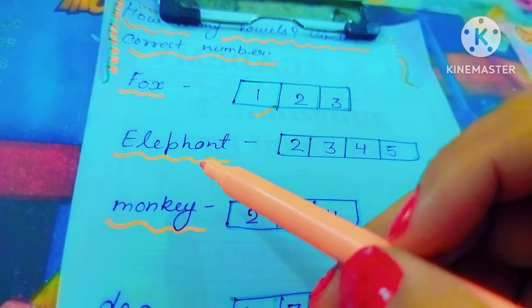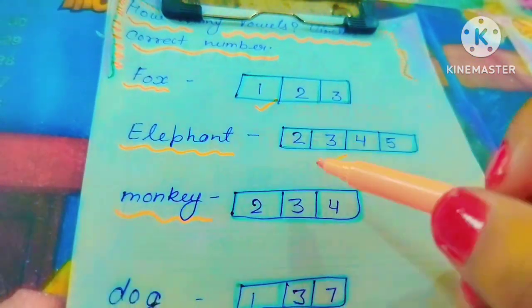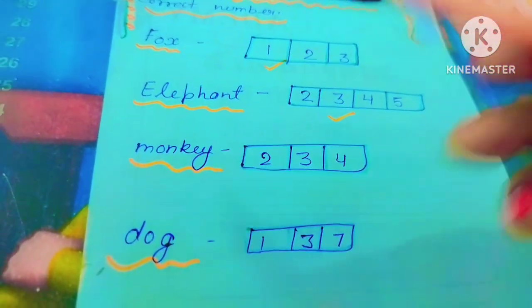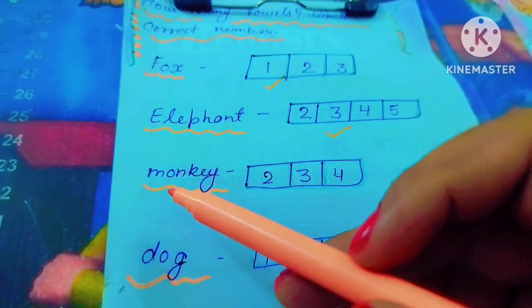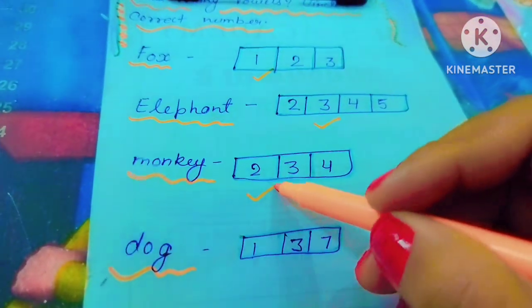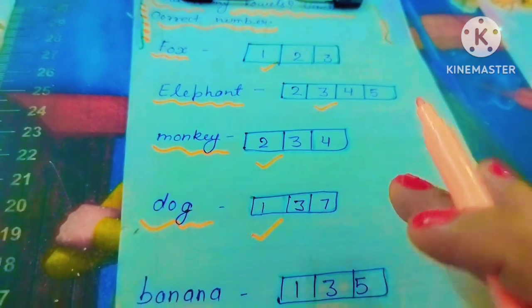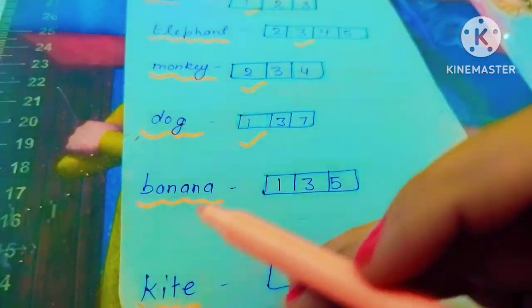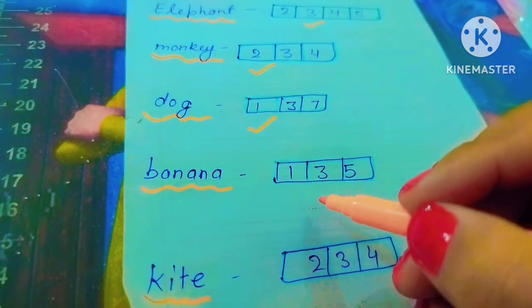Here we have 3 vowels, so we will tick 3. Next word is monkey. In monkey we are showing how many vowels are there - O and E, it means 2, so we will tick 2. In the dog we are showing how many vowels - 1. In the banana we are showing how many vowels are there - 3: A, A, A. So we will tick 3.